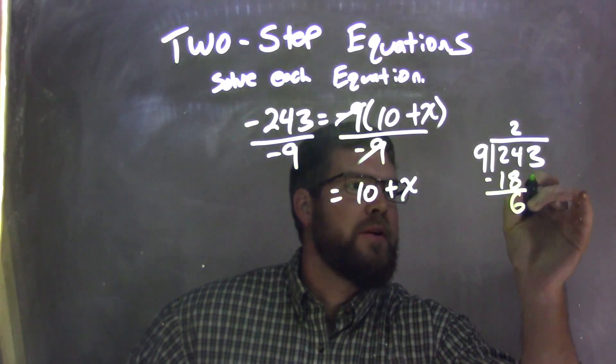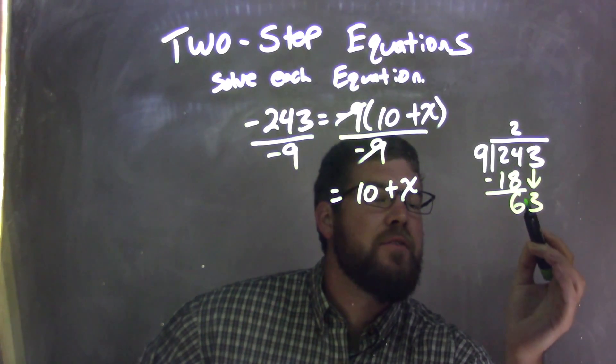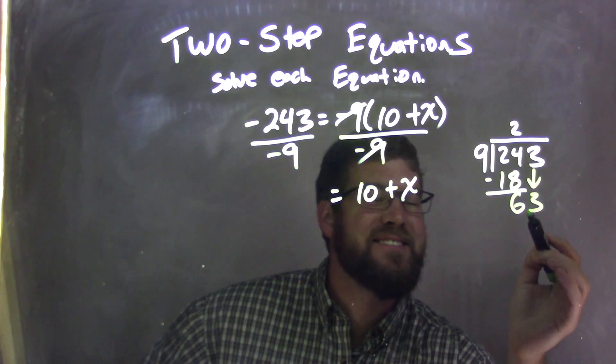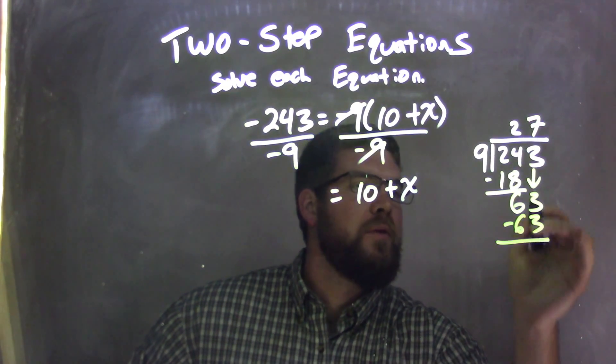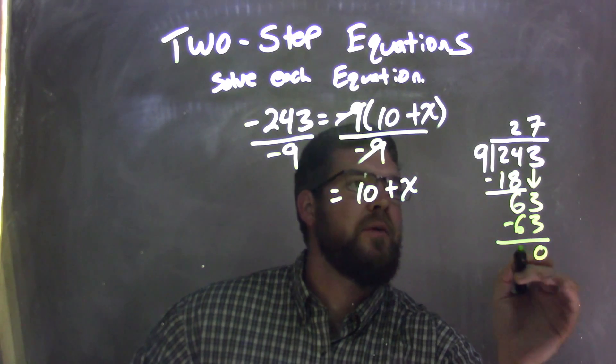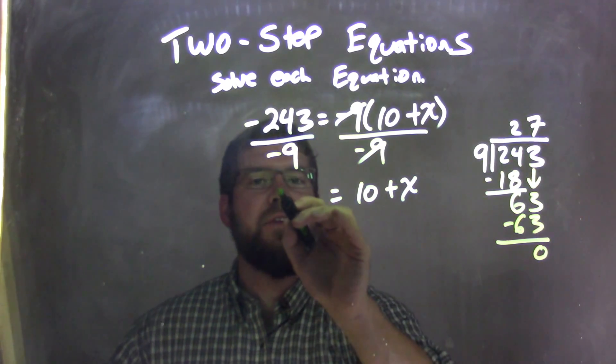Well, sorry, I'm going to bring down 3. 9 goes into 63 how many times? That's 7, right? 7 times 9 is 63. We subtract them, 63 minus 63 is 0, so now I have a 27 up here. So 9 goes into 243, 27 times.